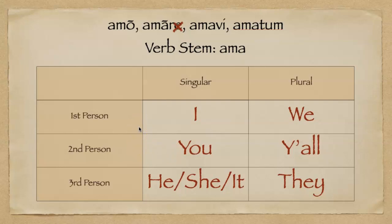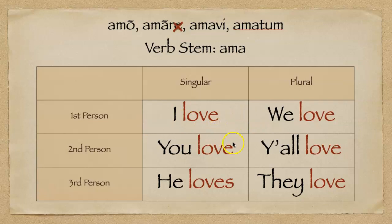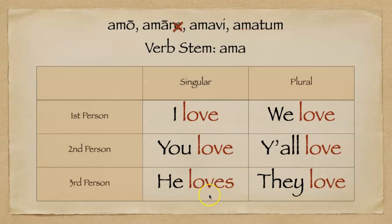After that, we're going to drop in the verb. Our verb, 'amo,' means 'to love,' so we will drop in: I love, you love, he/she/it loves. Notice that in third singular we have to add the S for proper subject-verb agreement in English. Then: we love, y'all love, and they love.